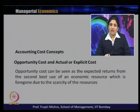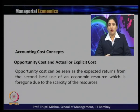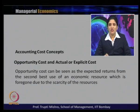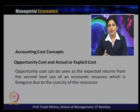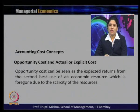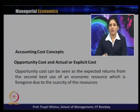The first type here is opportunity cost and actual or explicit cost. Opportunity cost is nothing but the cost-benefit associated with the next best alternative. Opportunity cost can be seen as the expected returns from the second best use of an economic resource which is foregone due to scarcity of resources.